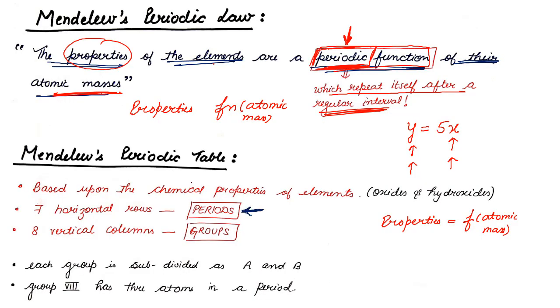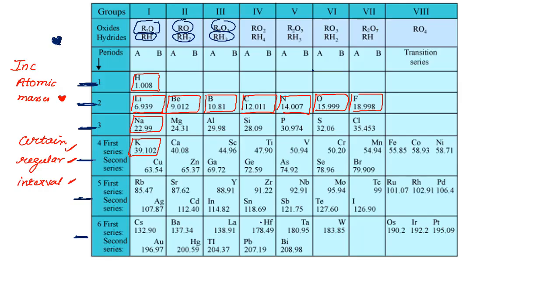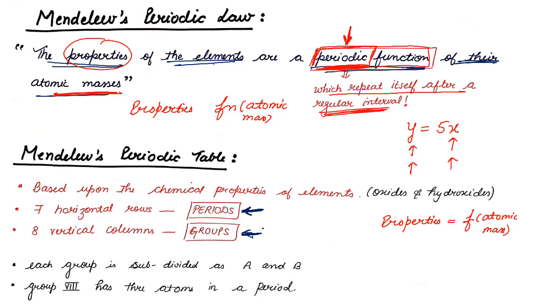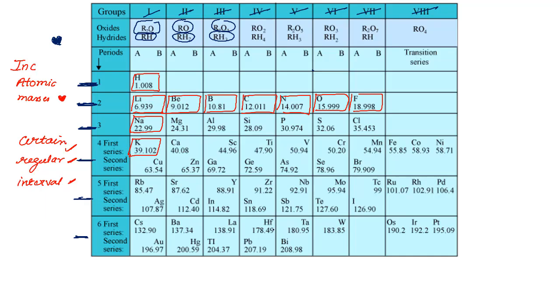Period means seven horizontal rows and there will be eight vertical columns. Eight vertical columns if I show you. This is first, second, third, fourth, fifth, sixth, seventh, eighth vertical columns are there and these vertical columns will be known as groups. Now, each group is further divided into two subgroups.